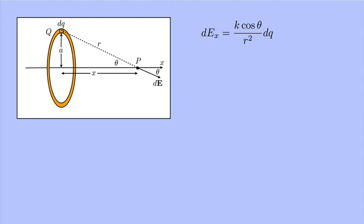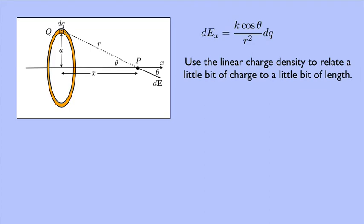Now, we can use linear charge density to relate a little bit of charge to a little bit of length. Lambda is charge per unit length, so that's q over the length. Well, that's the circumference, 2 pi a.